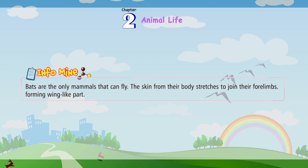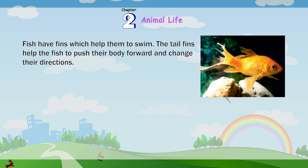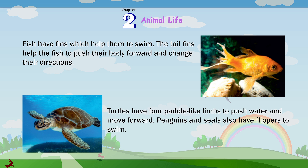Bats are the only mammals that can fly — the skin from their body stretches to join their forelimbs, forming wing-like parts. Fish have fins which help them to swim; the tail fins help the fish to push their body forward and change direction. Turtles have four paddle-like limbs to push water and move forward. Penguins and seals also have flippers to swim.